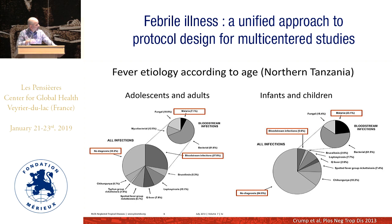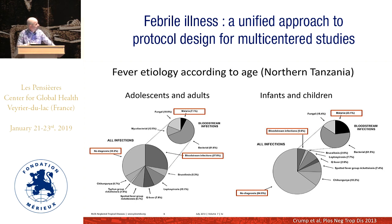Regarding age profile, I take one of the first studies by Crump in northern Tanzania. Bloodstream infection at that time meant blood culture positive, malaria parasite, and fungi. You can see there are a lot of differences between adults and children. For example, malaria in adults was 7% versus 27% in infants. Bloodstream infection was 27% in adults but much less in children. Depending on your study population, you will have different results.